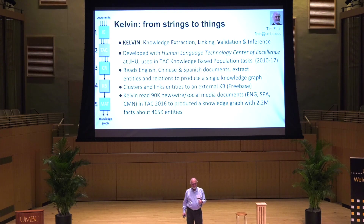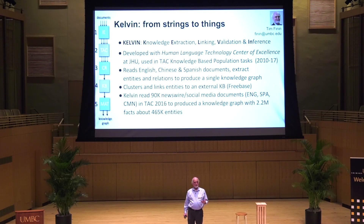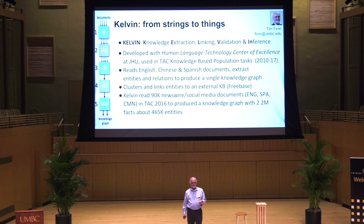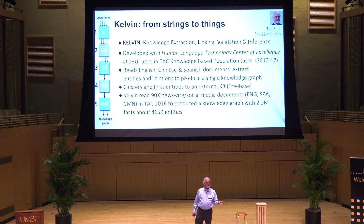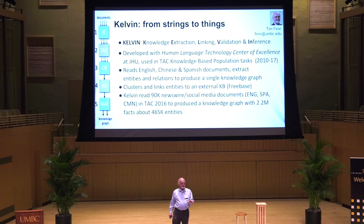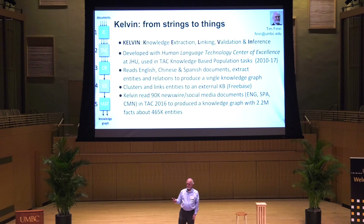The second example is work I've been directly involved with on extracting information from text. We helped develop a system called Kelvin at the Human Language Technology Center of Excellence, housed at Johns Hopkins, including people from Hopkins, UMBC, and the University of Maryland College Park. We've used this system to take part in NIST's Text Analysis Conference Knowledge-Based Population Task. The task involves reading 90,000 documents — a third in English, a third in Chinese, a third in Spanish — and extracting entities, relations, and events.